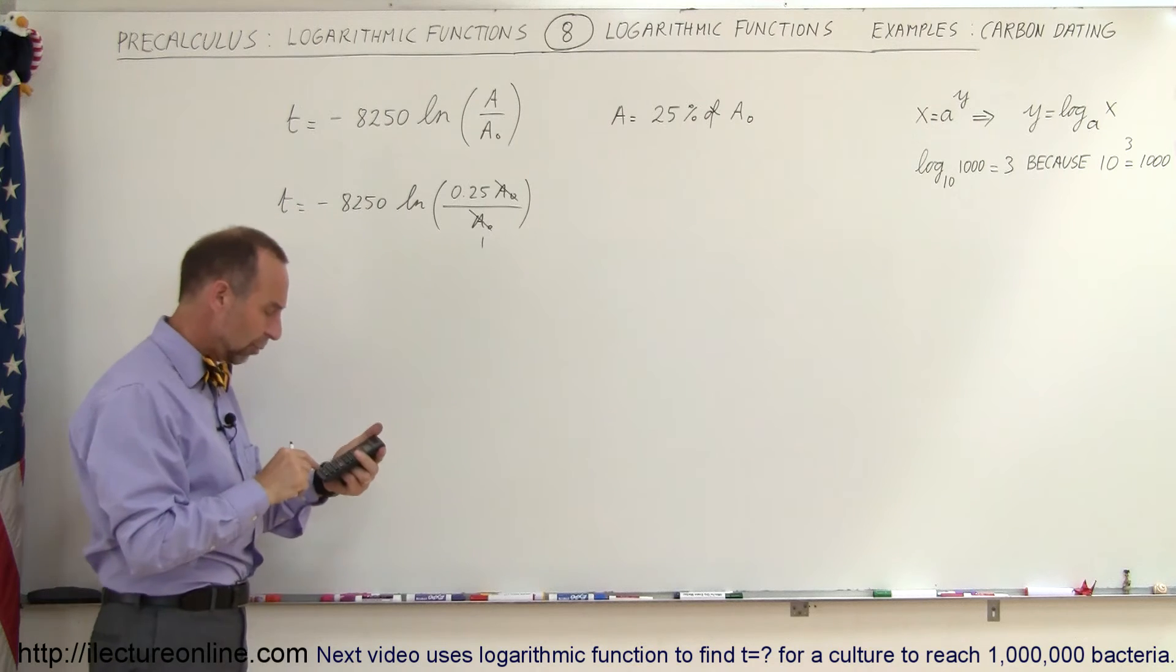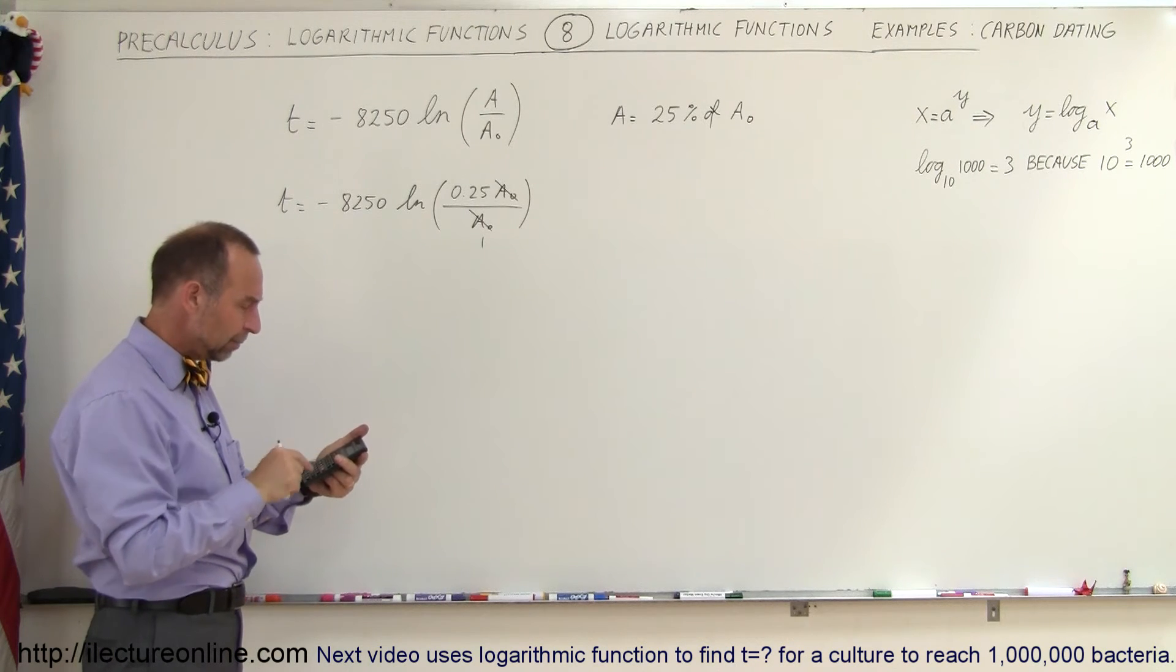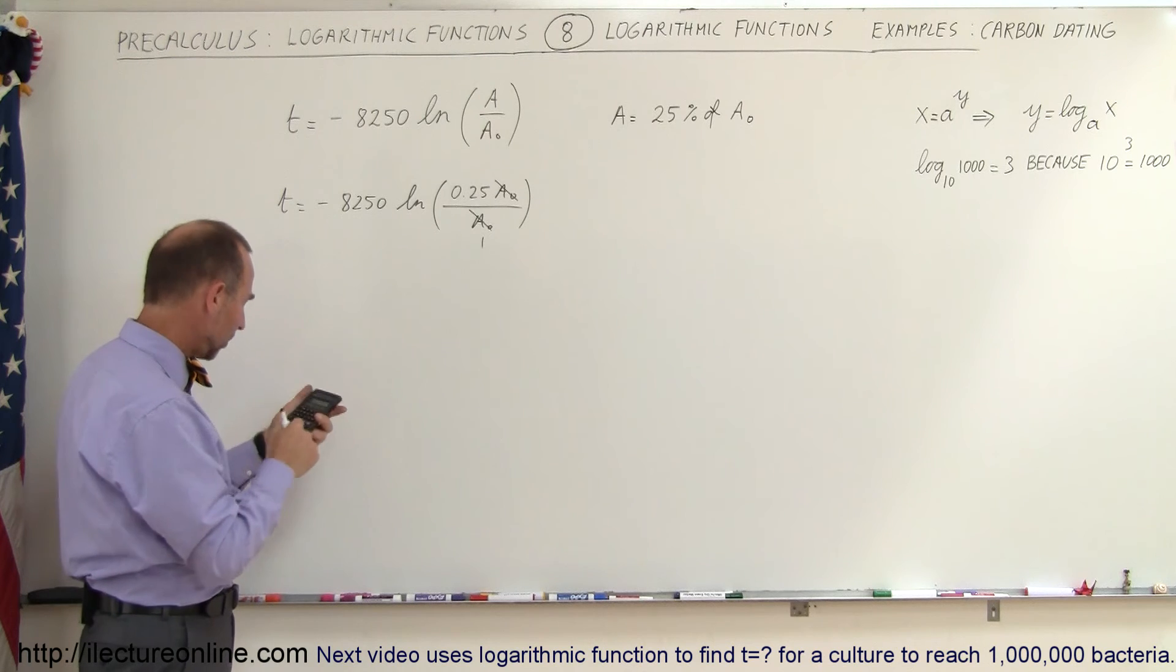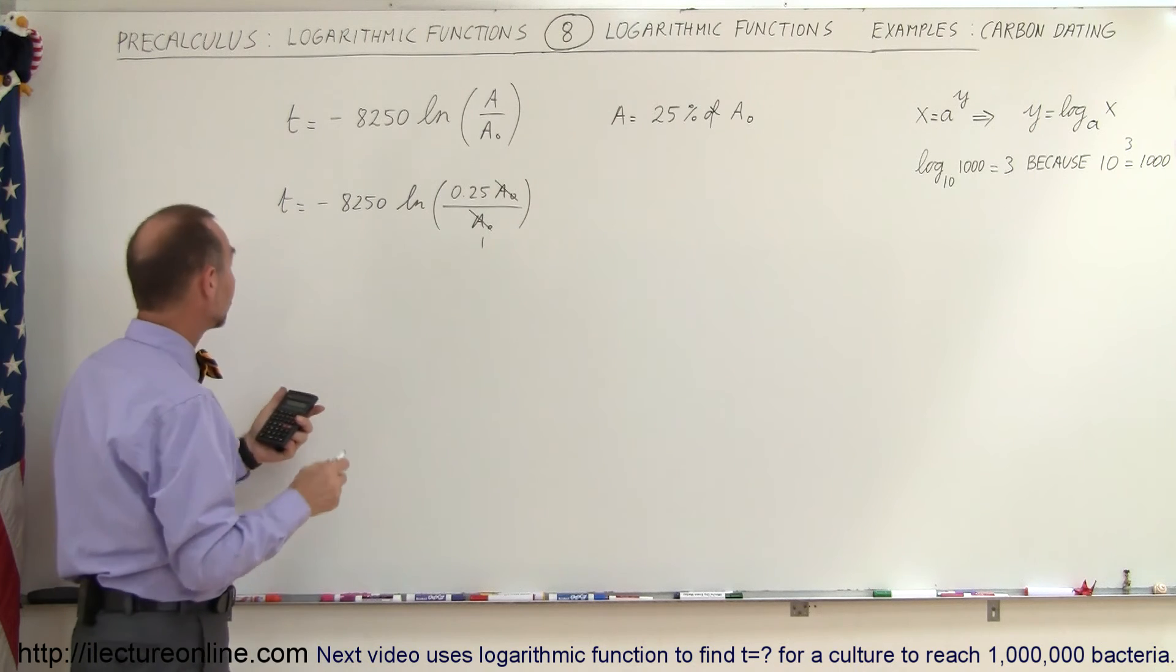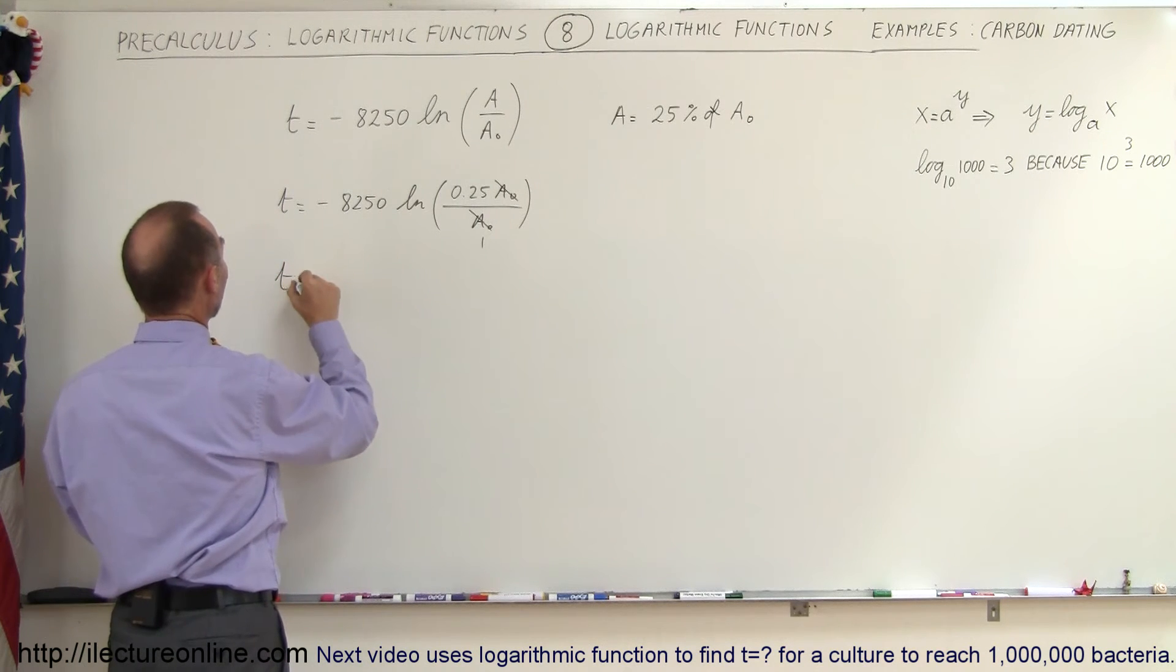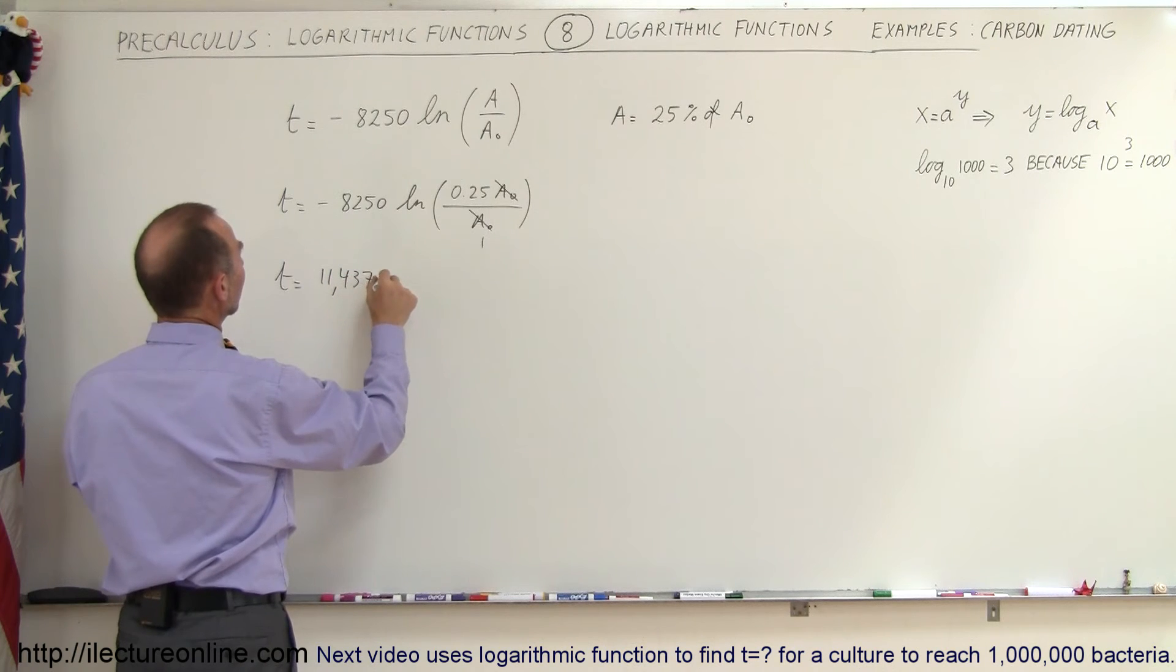It becomes over 1. So we take 0.25 times the natural log, take the natural log of that, and we multiply that times 8,250 times the minus, and so we know then that the artifact has now an age of 11,437 years.